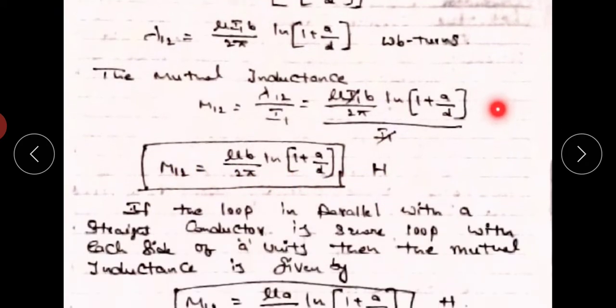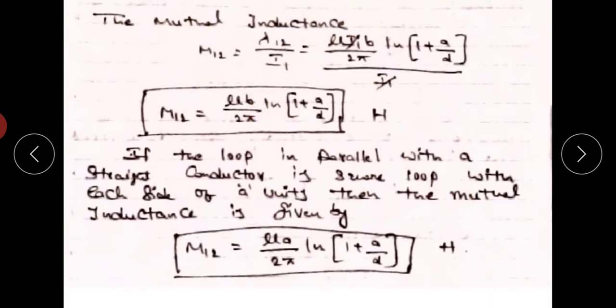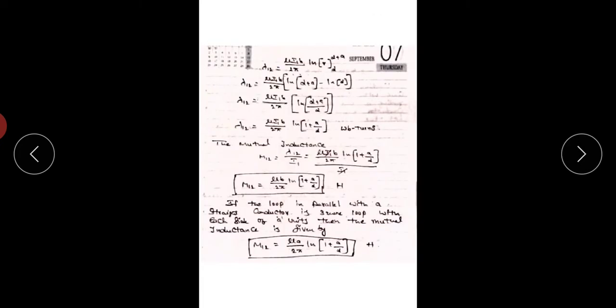M₁₂ is the mutual inductance between circuit 1 and circuit 2 — it equals the flux linkages in circuit 2 due to circuit 1's current, divided by I₁. Therefore, M₁₂ = μB / 2π · ln(1 + a/d) henries. This is the derived expression for the mutual inductance between a straight conductor and a rectangular loop.